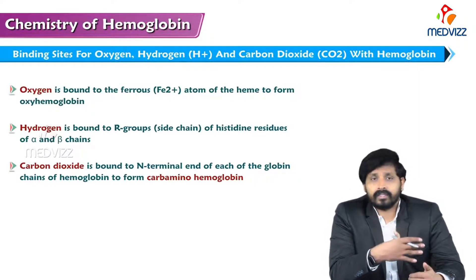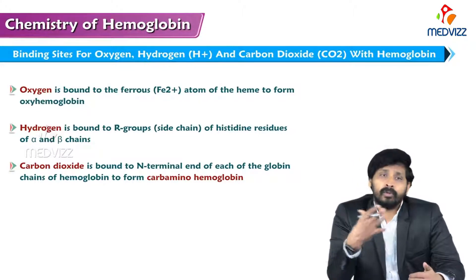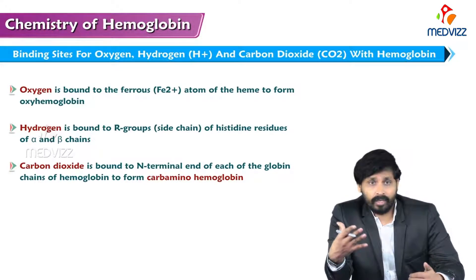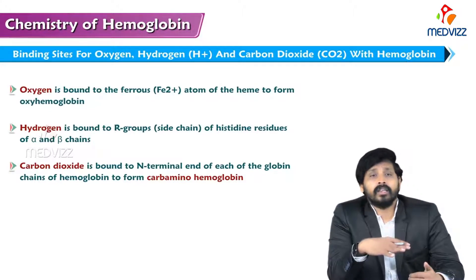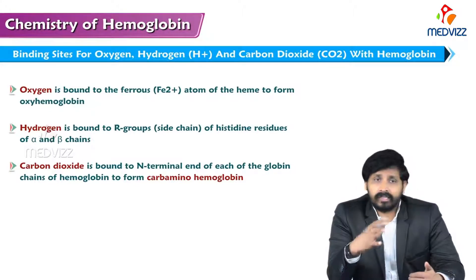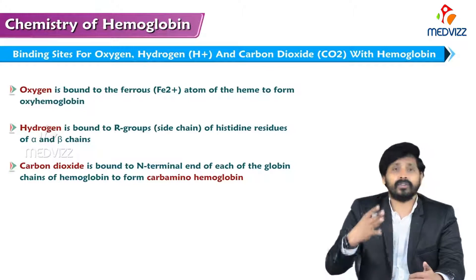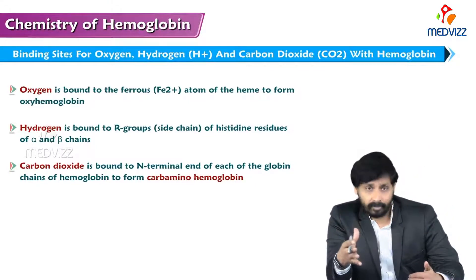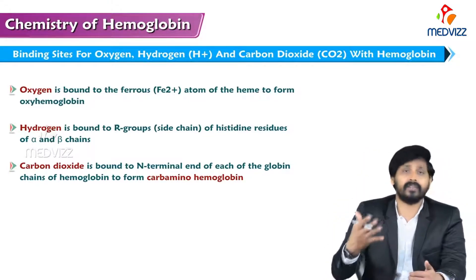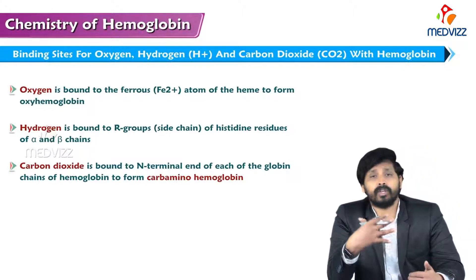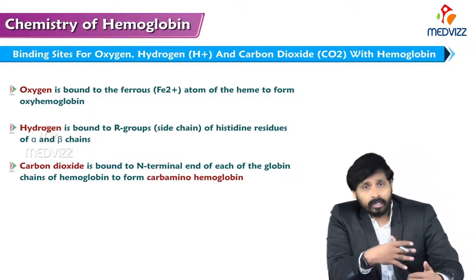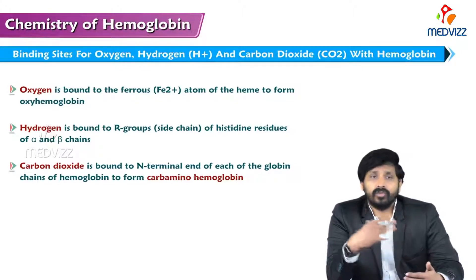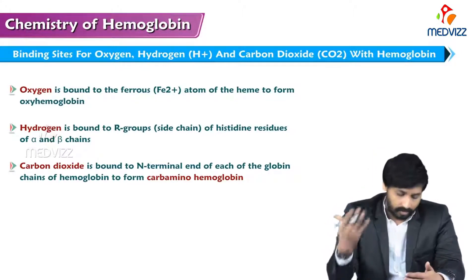Hemoglobin is one of the buffering molecules, helping to resist acid-base changes inside the cell. This attachment of hydrogens to the globin chains of hemoglobin is very important. Carbon dioxide, which is produced because of cellular respiration at the peripheral tissues and cellular level, is transported to the lungs.